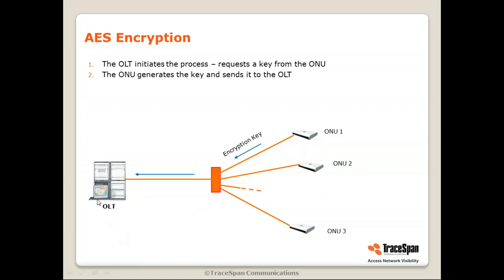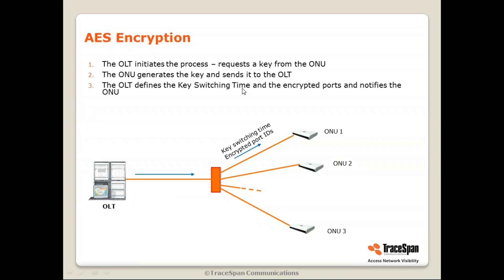Every time the OLT requests a key, it's a different one — the ONU has a random number generator. So the OLT initiates, the ONU generates the key, and then when the OLT receives it, it defines the key switching time — meaning from when this key will be effective — and which ports within the ONU will be encrypted. Once this is done, the OLT and ONU are ready to start encrypting the traffic. Since both ends have the key, the ONU can decrypt whatever the OLT sends.